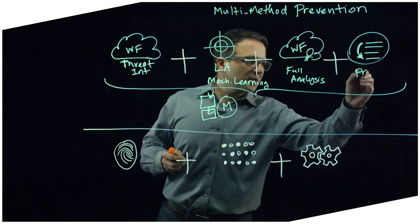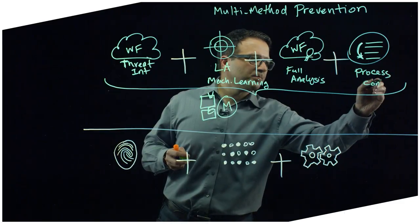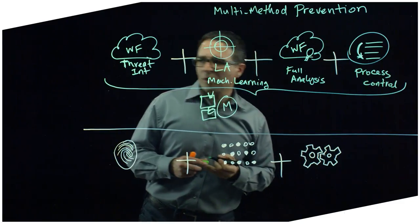We also have another capability which is called malicious process control. Malicious process control allows us to identify whether a particular application that is typically a risky application is being launched by another application. So in a sense, it gives us fine-grained control of what applications can actually launch which processes as child processes.